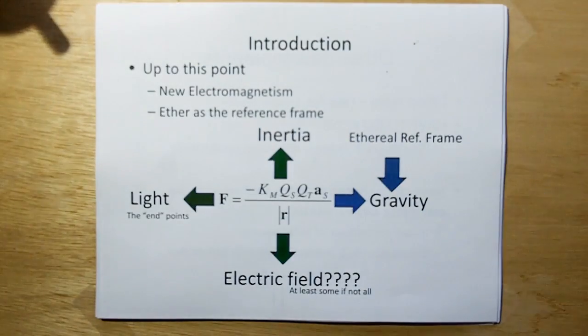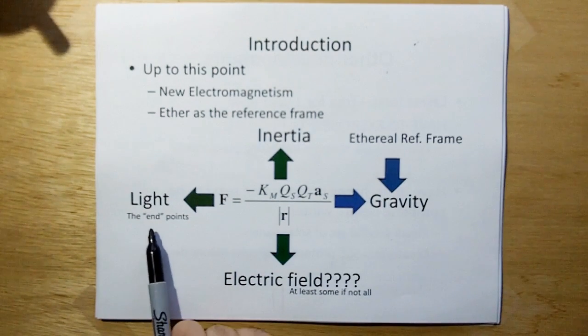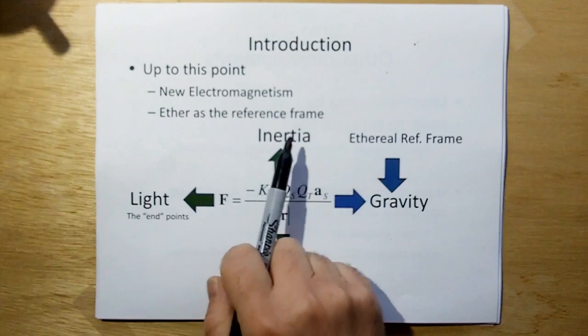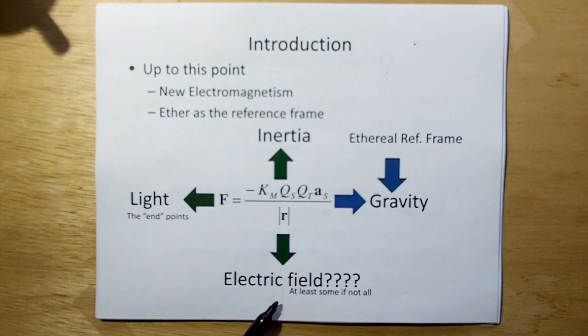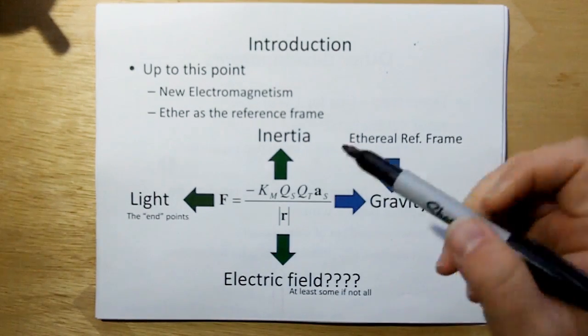Up to this point, we've had new electromagnetism, we've chosen Ether as the new reference frame. From new electromagnetism we have new induction. We showed that new induction is the model of light, the model of inertia, it could be wholly or partially part of the electric field that we measure, and in this video I'm going to show you with the ethereal reference frame, it's also the mechanism of gravity.